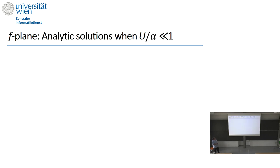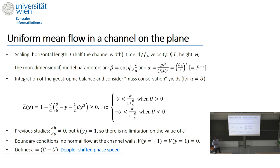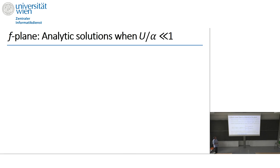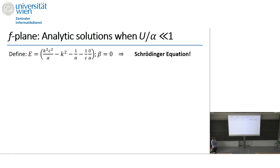On the F-plane, beta equals zero, and we can make an analytical approximation when the parameter U/alpha is very small. We can then derive a Schrödinger-like equation.